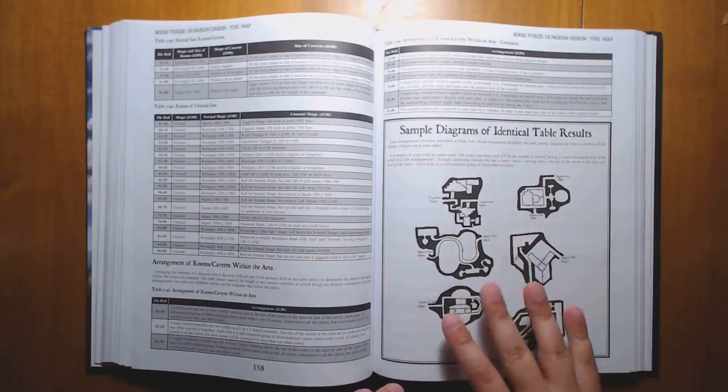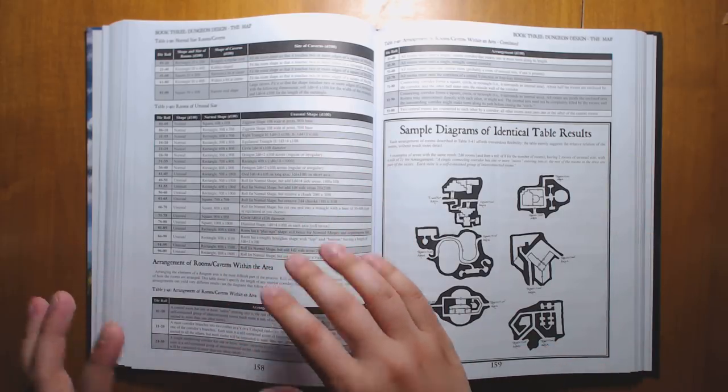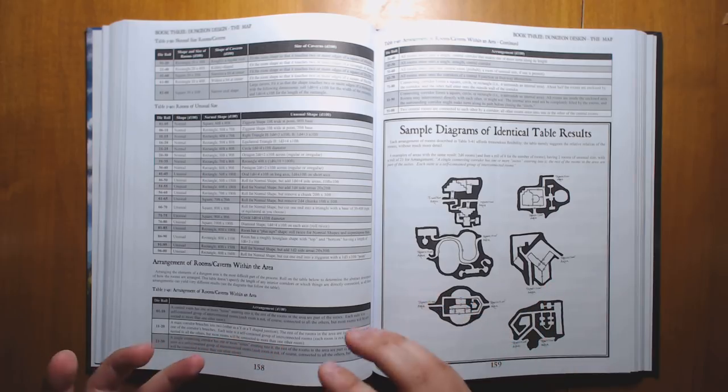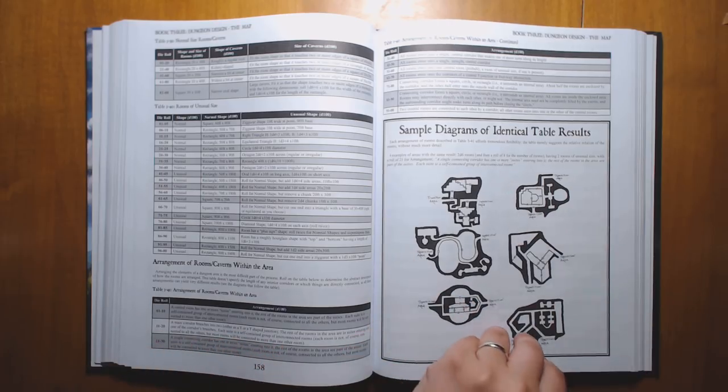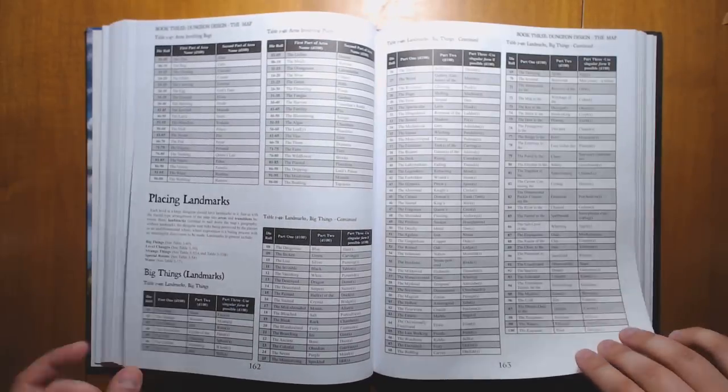Teleportation. Diagrams of ways that you can lay out dungeons. So he has some randomizations for different types of rooms and layouts. But the same layout that you roll can be used in a whole bunch of different ways. And he gives examples of that.